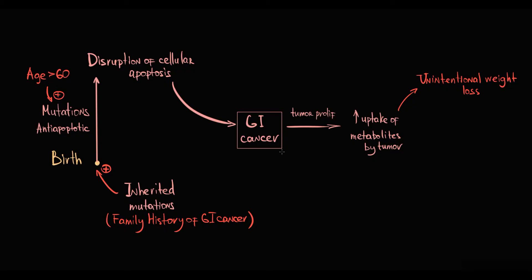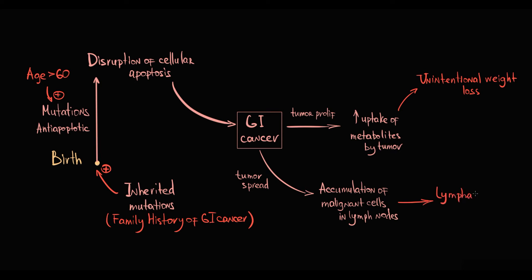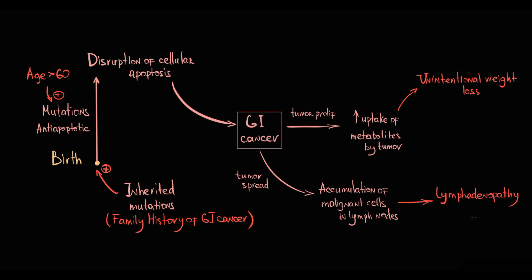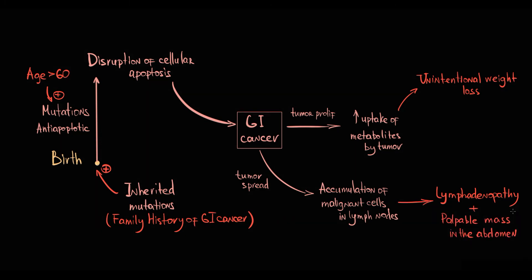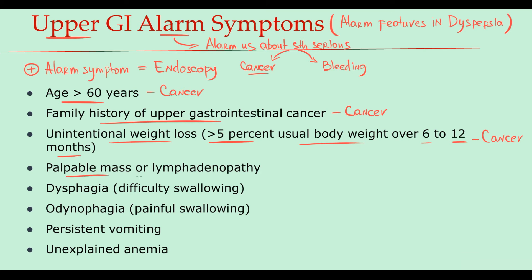Also, once cancer develops, malignant cells have a tendency to spread through the lymphatic system with further accumulation in lymphatic nodes. With accumulation of malignant cells, the size of the lymph nodes increases — a condition known as lymphadenopathy. Also on clinical examination it may be present as a palpable mass in the abdomen. So once we find a palpable mass or lymphadenopathy, it's a strong indication for an endoscopy.